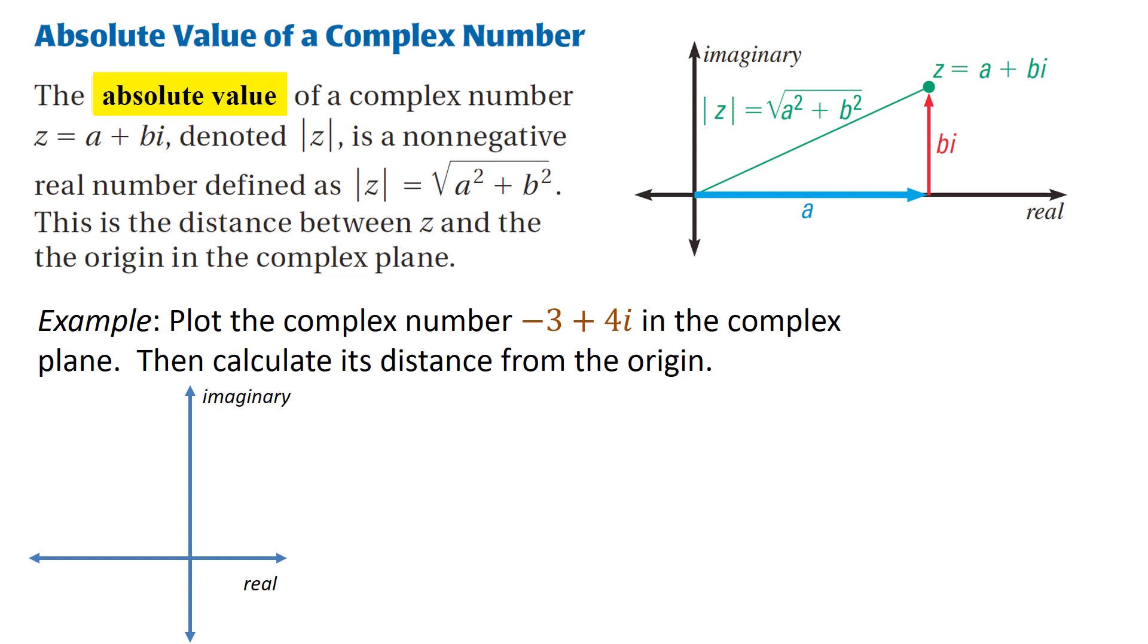The absolute value of a complex number z equals a plus bi, denoted by absolute value of z, is a nonnegative real number. When you're finding the absolute value of a complex number, it's giving you the distance. So absolute value of z will give you the distance from the origin to the point.